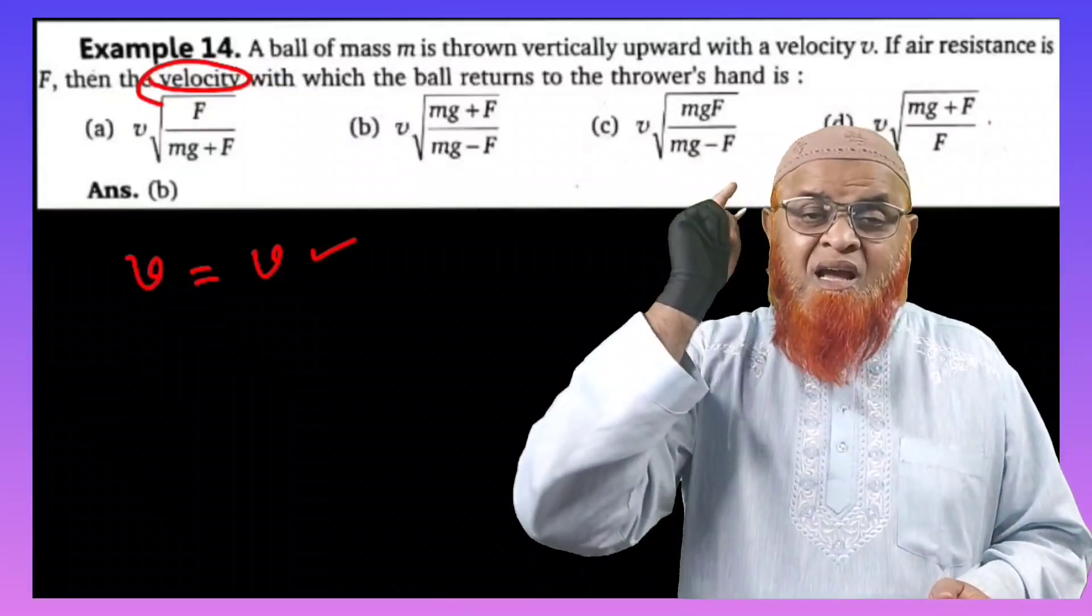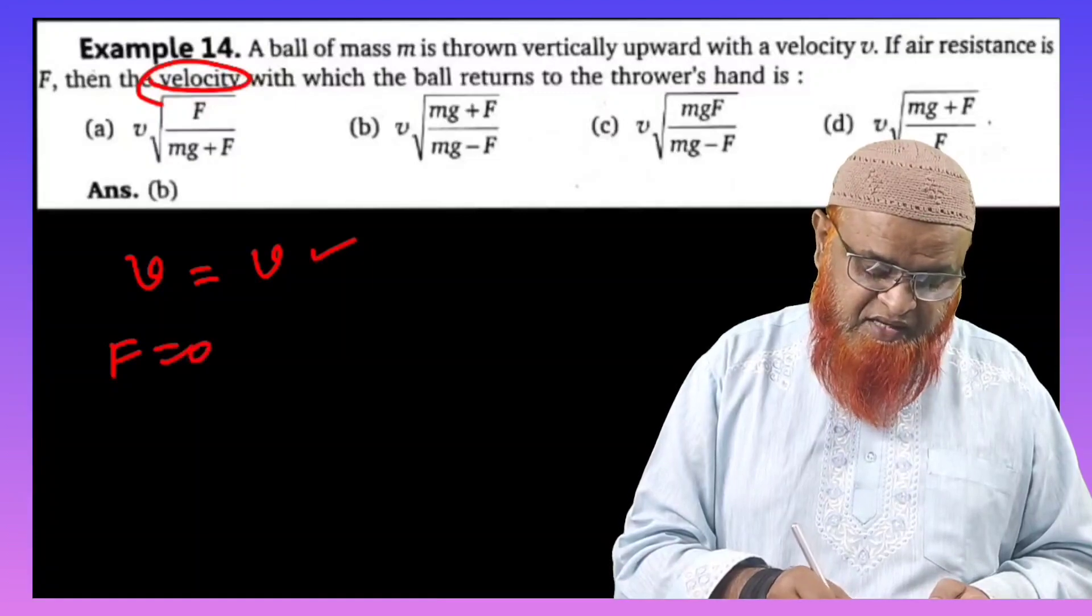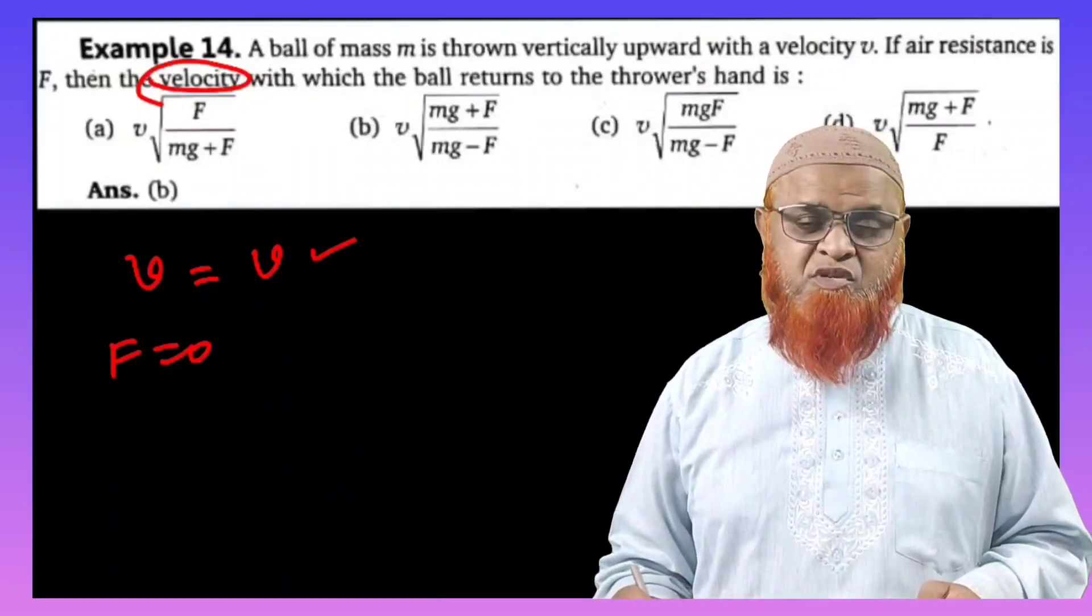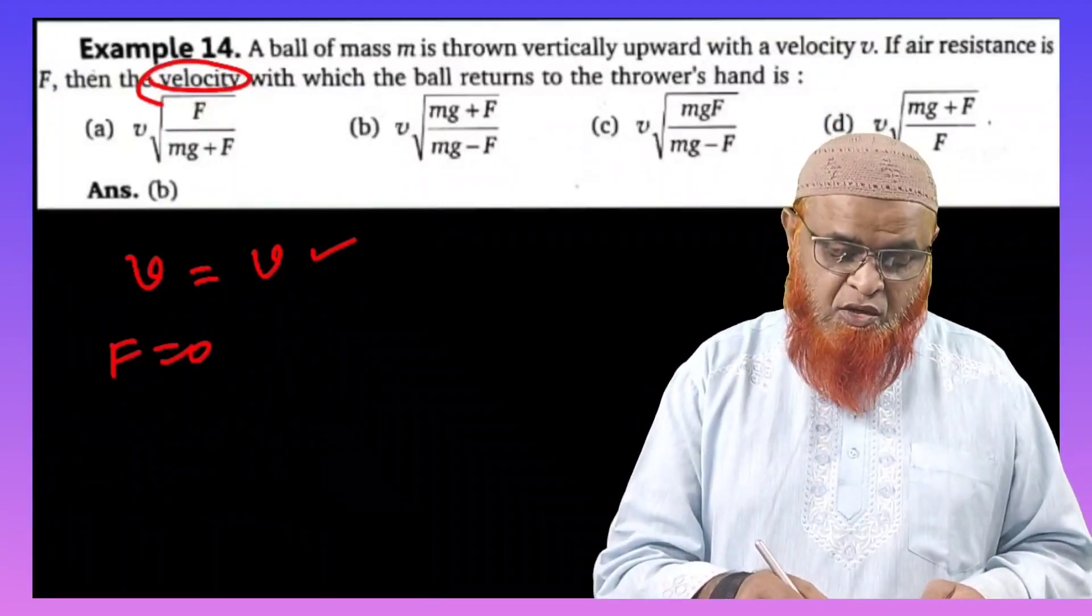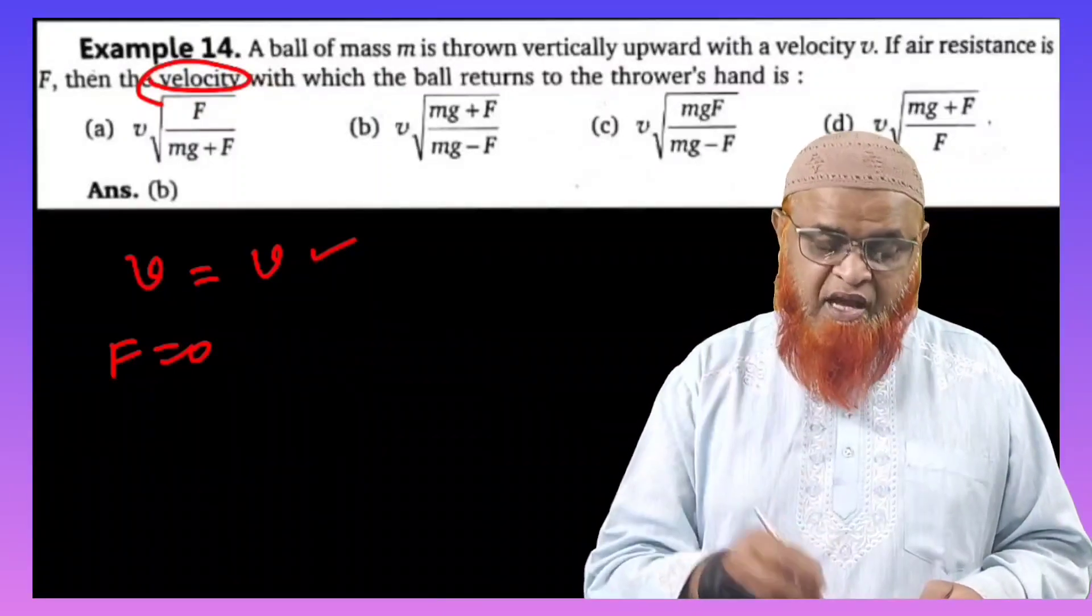For that, a simple logical and technical shortcut is you just take F is equal to 0 in these problems. If you just take F equal to 0, you will see that if you apply F equal to 0 to this problem, option number A goes wrong.